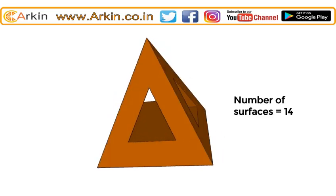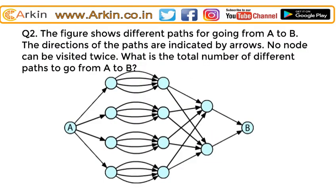The figure shows different paths for going from A to B. The direction of the paths is indicated by arrows. No node can be visited twice. What is the total number of different paths to go from A to B? One can reach from A to B via these different paths indicated by arrows. Let's see how it can be done.